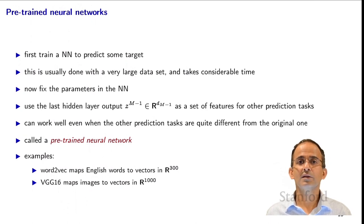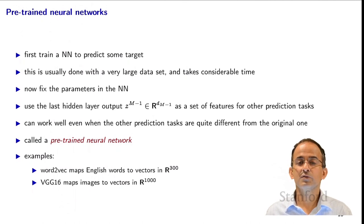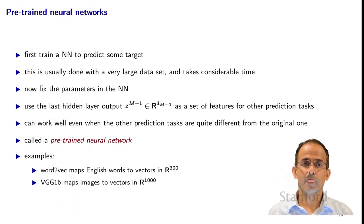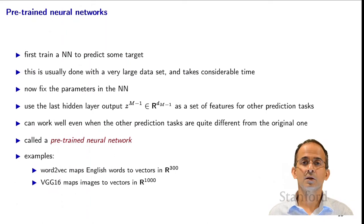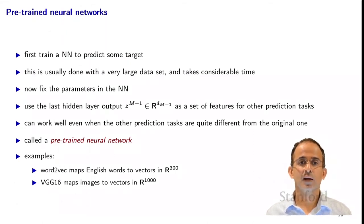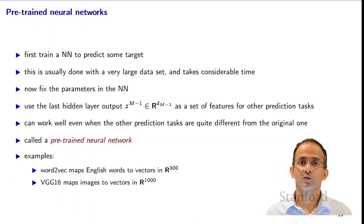This actually works quite well even when training for a quite different task. If one has trained a neural network for one type of image classification, one can often use it to do a different type of image classification. This is called pre-trained neural networks. We saw two examples of these in earlier sections: VGG-16 for images and word2vec for English words. Both of those were pre-trained neural networks, and we viewed them there as feature maps. Of course, if we're not training their parameters, that's precisely what they are.